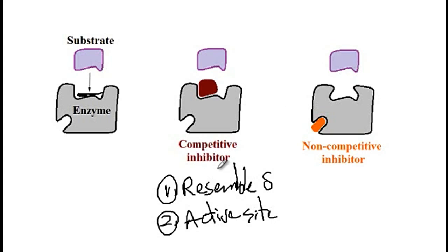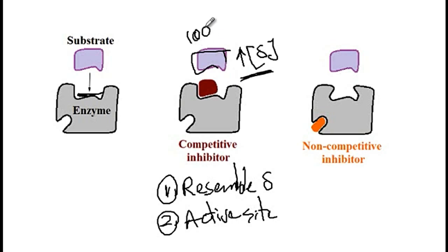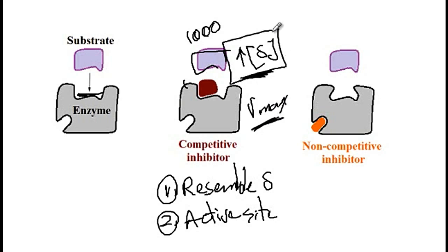Another feature of the competitive inhibitor is that it can be overcome by elevated substrate concentration. So if you increase the concentration of substrate — say, a 1000 to 1 ratio — there is not much chance for the competitive inhibitor to occupy the active site. So you can still reach the Vmax, or maximum function of the enzyme, if you increase the substrate concentration.